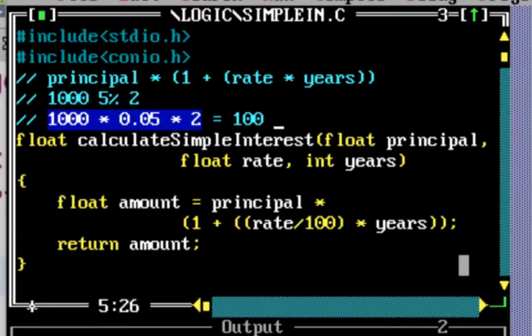So this is the interest, and to this we need to add the principle, that is the original amount which we lent. That returns the total amount after simple interest. So this is the calculation which we are trying to implement.